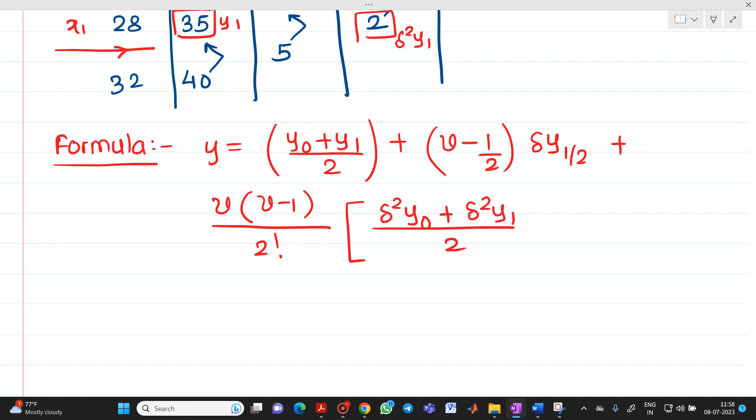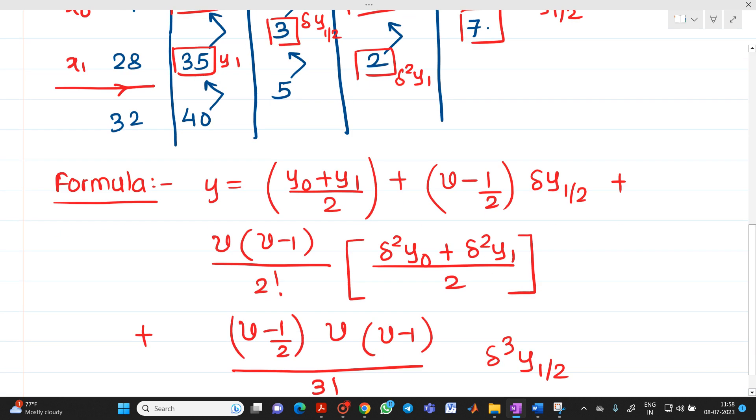So we have a third term also, that is Δ³ also. So it will be + [(v - 1/2) × v × (v-1)]/3! × Δ³y₁/₂. So we know all these values from the table.